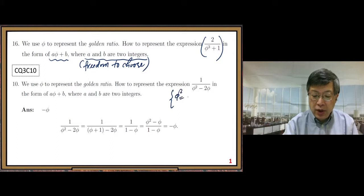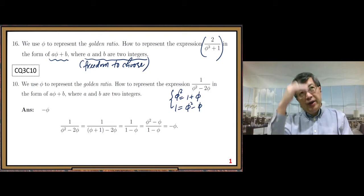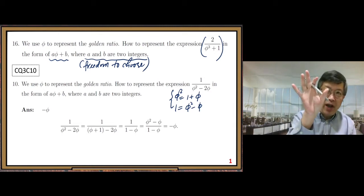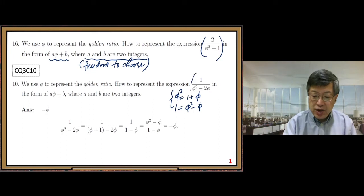φ squared equals, what's that? One plus φ, right? One equals φ squared minus φ. When we need to use one of the two properties, we select it and try to simplify the expression. In this example, one over φ squared minus 2φ.